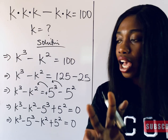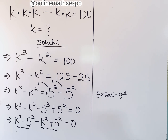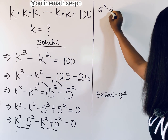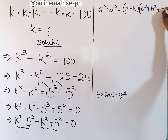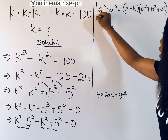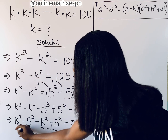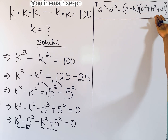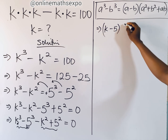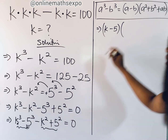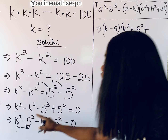Now we gather terms with the same pairs. We work on k³ - 5³ using the difference of cubes formula: a³ - b³ = (a - b)(a² + b² + ab). Here a = k and b = 5, so this gives us (k - 5)(k² + 5² + k·5), which is (k - 5)(k² + 25 + 5k).